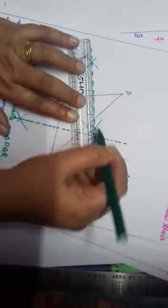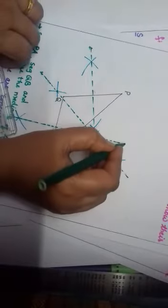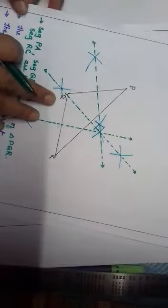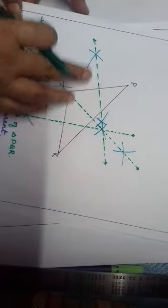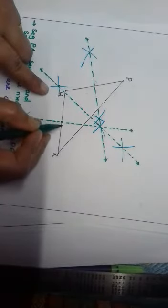In this way we have drawn all three perpendicular bisector lines. Now, as the perpendicular bisectors have been drawn, we get the midpoint of each side. So on this side, this will be your midpoint. Let us now join the midpoints.